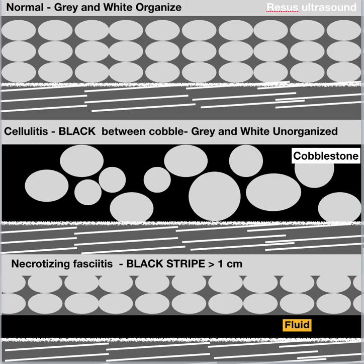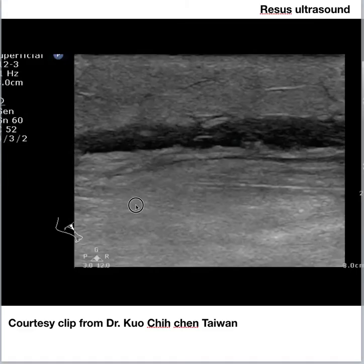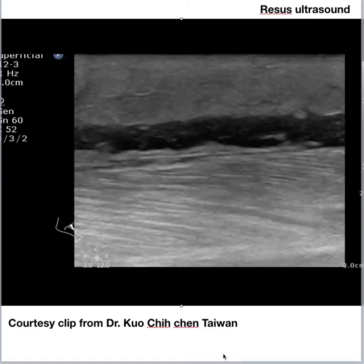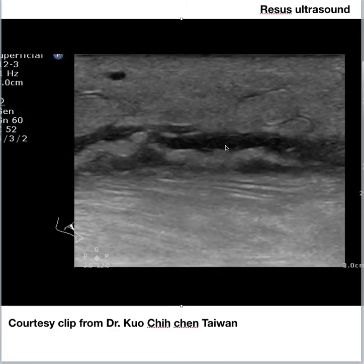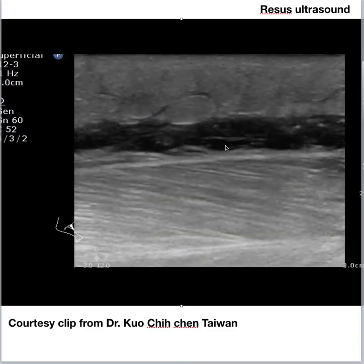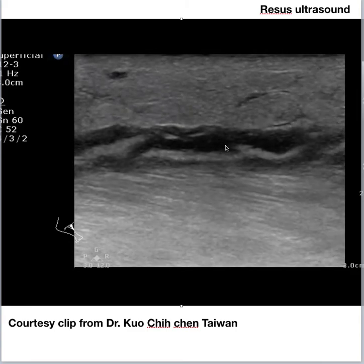There is normal and then there is cellulitis. In necrotizing fasciitis, when you look from below, you see muscle with a striated pattern, then fascia as a bright white thick line. You will see fluid which looks like a black stripe, and normally it is more than one centimeter wide. This clinical clip from the third coalition from Taiwan shows below: muscle with striated pattern, and above, a black stripe like a river dividing subcutaneous tissue and muscle.